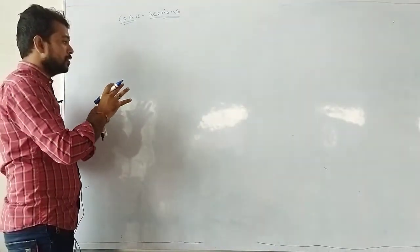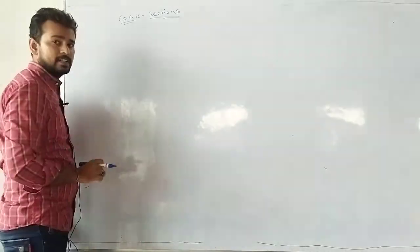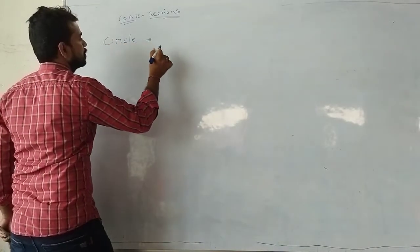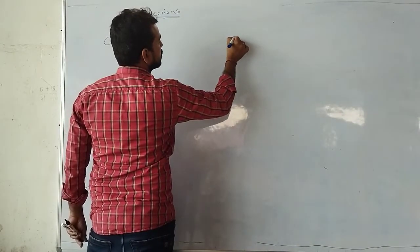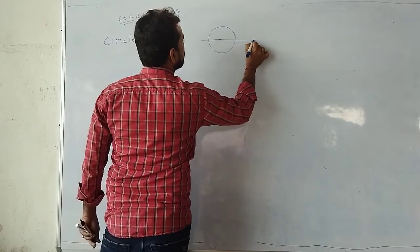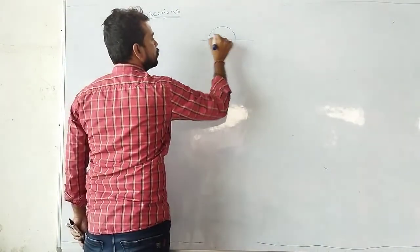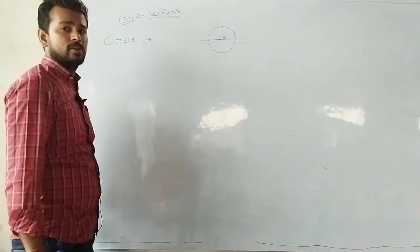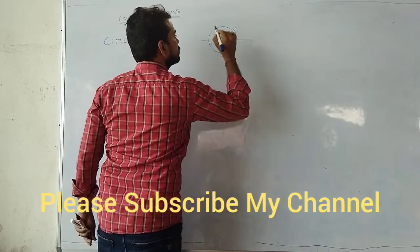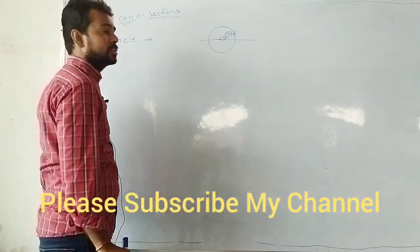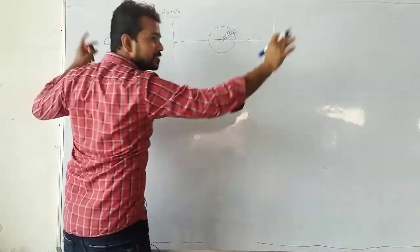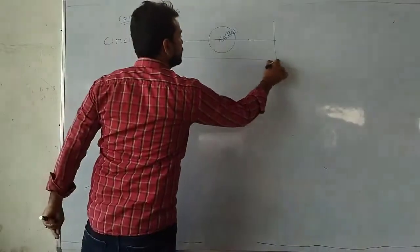How are these curves differentiated with the help of directrix? For a circle, the fixed points and origin coincide with each other, and the fixed straight lines (directrices) are at infinity distance. For the circle, eccentricity E is equal to 0.